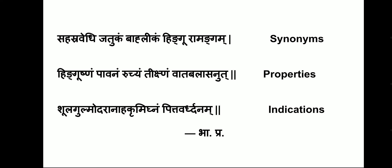Hingu is described as Ushnam, Pachanam, Ruchyam, Teekshnam, and Vata Balasanut. Hingu is Ushna virya and its Pradhana Karma is Pachana. It is Ruchya, meaning at a prophylactic dose it induces hunger and increases the patient's appetite. Rasa is Katu, Virya is Ushna, and Guna is Teekshna. Its Doshagna Karma is Vata and Kaphahara, and it is also Hrudya.